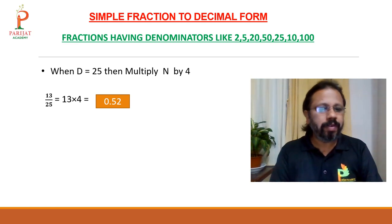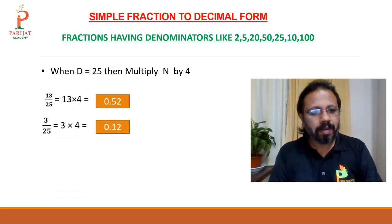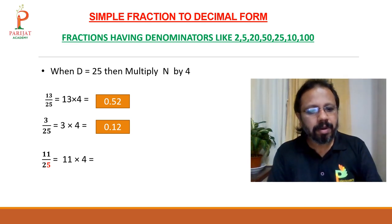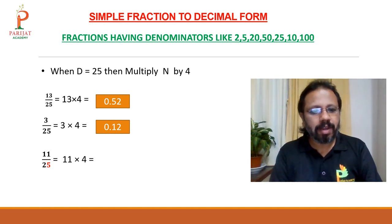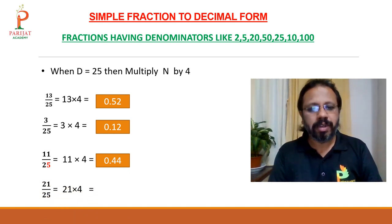3 upon 25: multiply 3 by 4 to get 12 — answer is 0.12. 11 upon 25: 11 times 4 is 44 — answer is 0.44. Always remember, if the denominator is 2 digits, leave the last 2 digits of the answer and give the decimal. 21 upon 25: 21 times 4 is 84 — answer is 0.84.